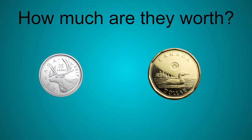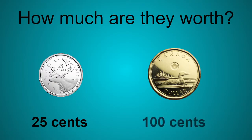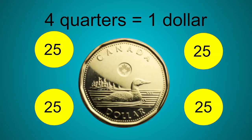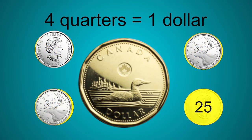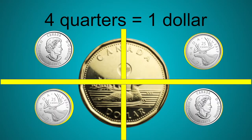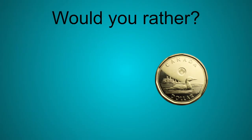To know which one would be the better deal, we need to know how much each coin is worth. A quarter is worth 25 cents, and a dollar coin — a loonie — is worth 100 cents. Four quarters equal one dollar: 25, 50, 75, 100 cents. You can remember that a quarter is called a quarter because it is 25 cents, or one fourth of a dollar — it's a quarter!